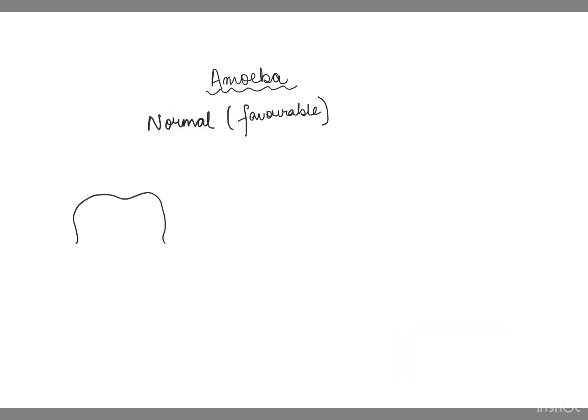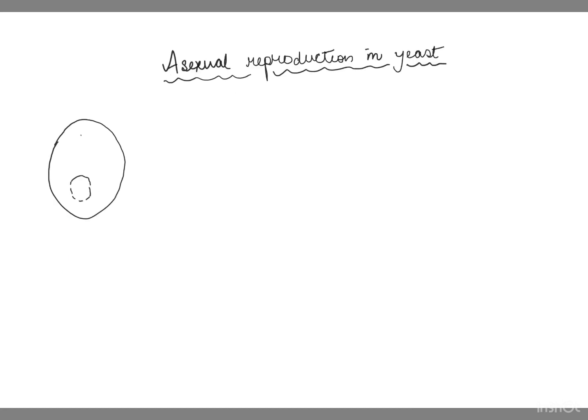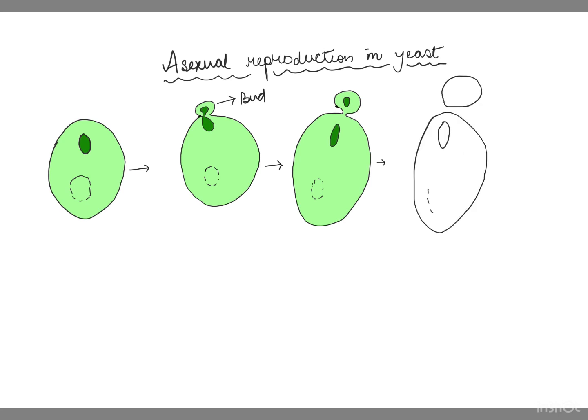In favorable conditions, amoeba reproduces by binary fission where it divides into two equal parts and grows. In yeast, the process is called budding - a small bud appears on the parent cell, grows, and eventually separates to form a new individual. After separation, the bud continues to grow and can produce its own buds.